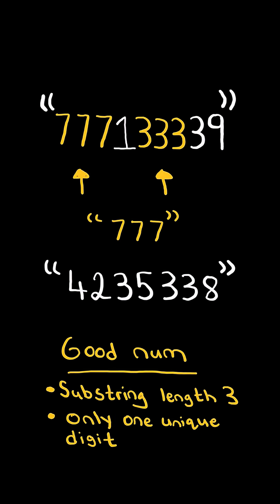Consider this new example. In this case, there is no good number of length three that only consists of one unique digit, so we return the empty string.